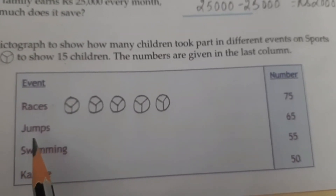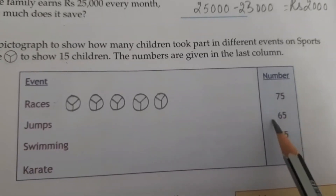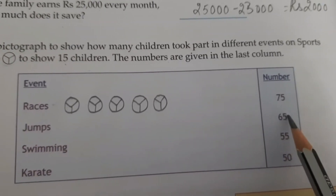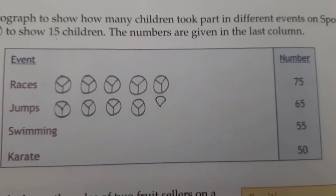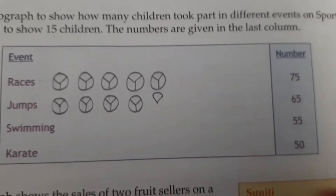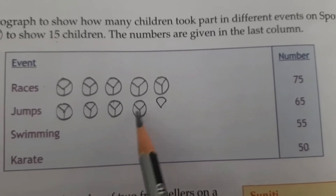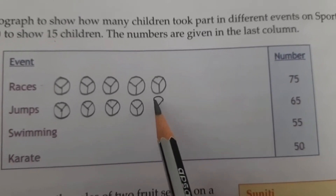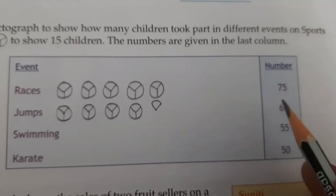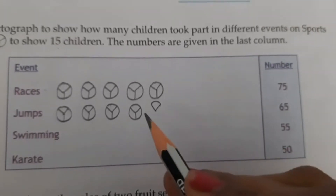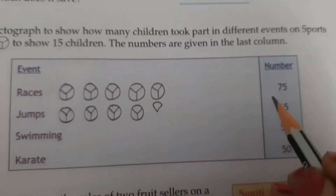In jumps, how many children took part? 65 children took part in jumps. Now 15 fives are 60, so we will draw 4 complete pictures and one partial picture, since 5 more students are there. So we will take 1 third part of the complete picture.